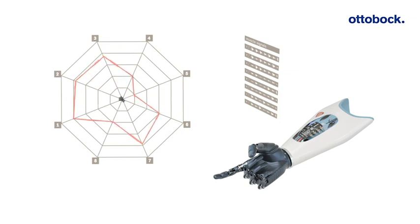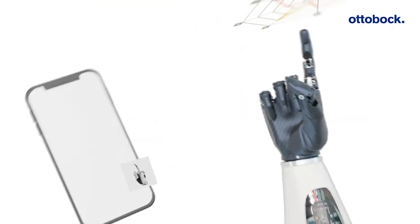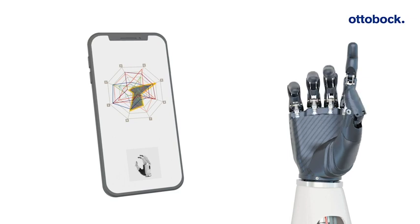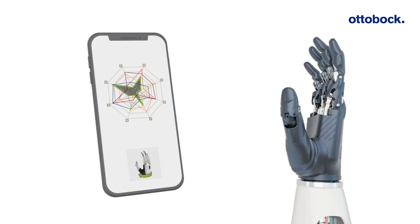The MyoPlus app is the central interface between the user and the control unit. It basically serves as a window into the prosthesis, visualizing the hidden movement patterns in the residual limb.